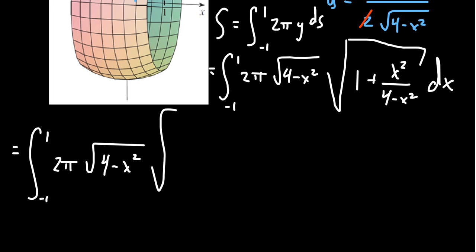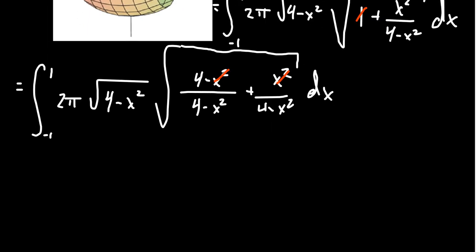So looking at this, we're going to rewrite this 1 as a fraction. The fraction we're going to get is 4 minus x squared on top, 4 minus x squared on bottom. We then add to this x squared over 4 minus x squared. This all sits inside the square root now. So what you're going to notice is the negative x squared will cancel with the x squared. That leaves us now, this simplification is going to be important for us.